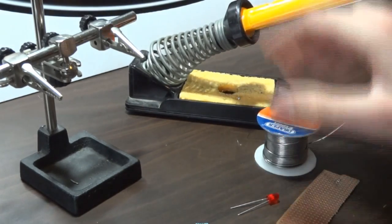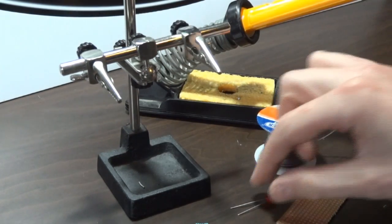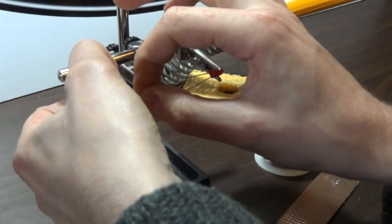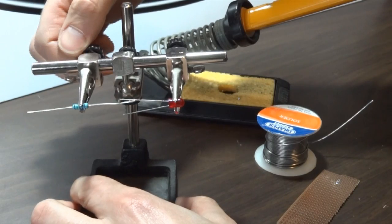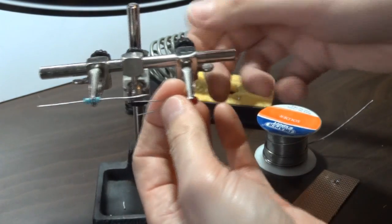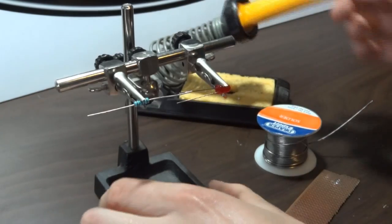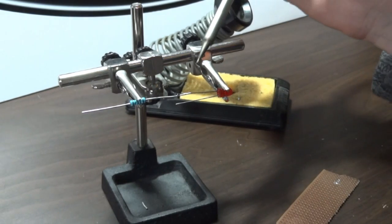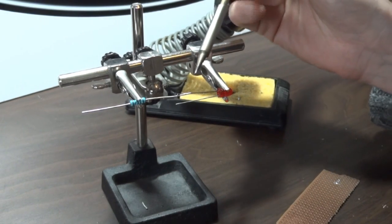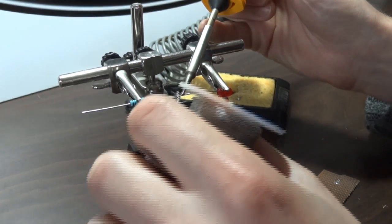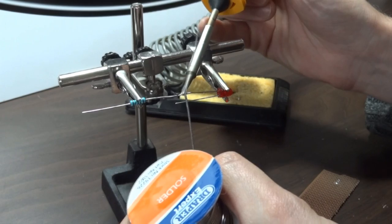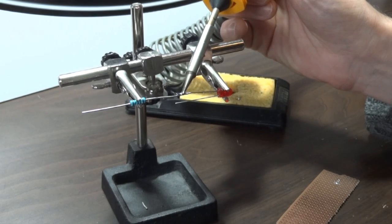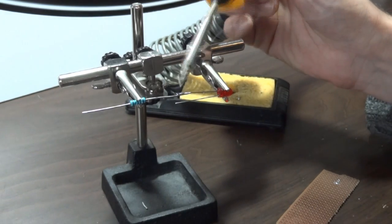So I'm going to solder this resistor and LED together, so I've got my helping hands here, which are quite useful for holding things. I'm just going to clip the two parts in there so that they're touching. Now the thing you should do when you're soldering is heat up both pieces of the metal that you're going to join together, and then apply the solder to the joint so it flows all the way around. Let it flow around with the solder away from the joint, and then take the iron off.